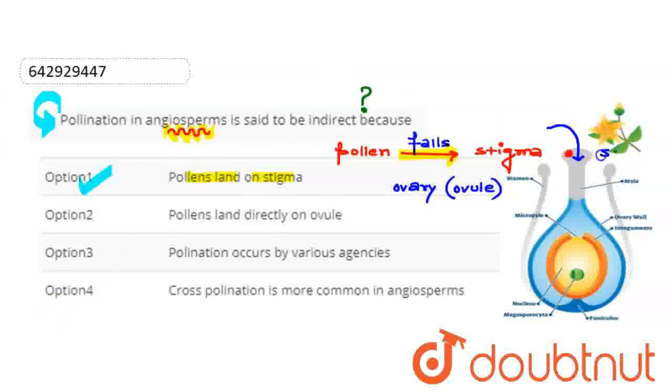The pollen lands on the stigma of gynoecium. This is the stigma point. So the pollen grain will grow a pollen tube, and then here it will fuse with the ovule in this manner.